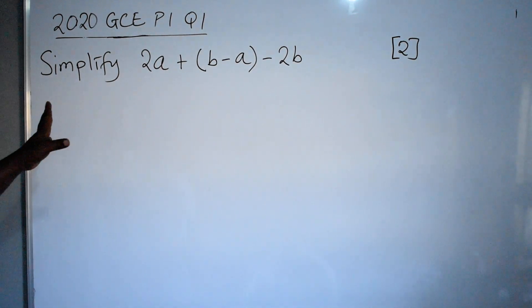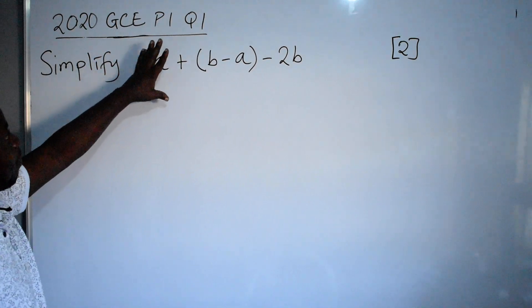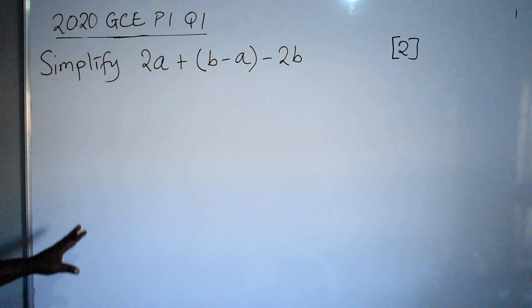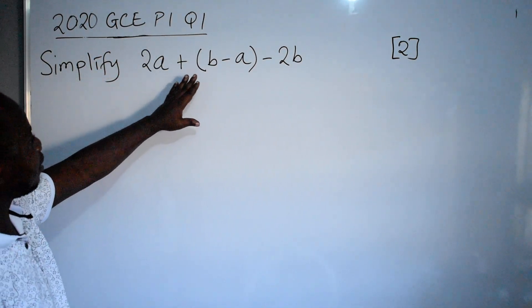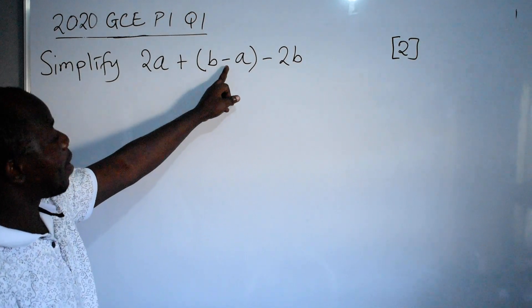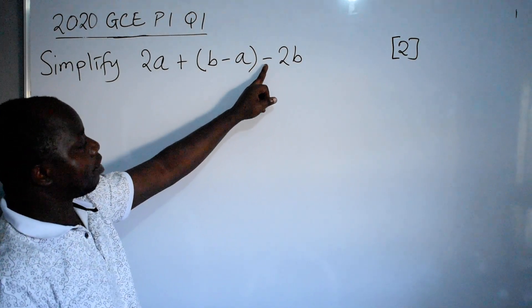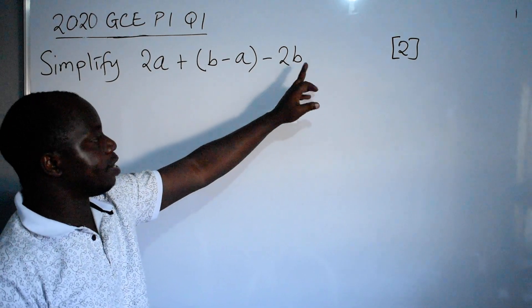Hello friends, let's look at the 2020 GCE paper 1 question 1. Simplify 2a plus in brackets we have b minus a outside the brackets minus 2b, 2 marks.